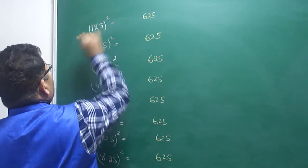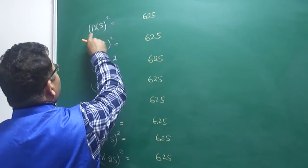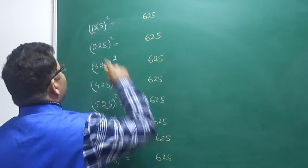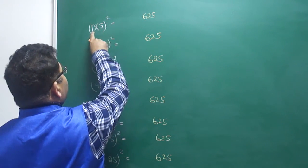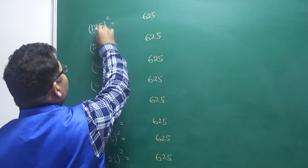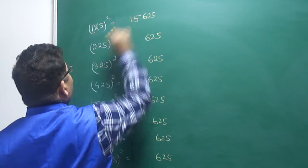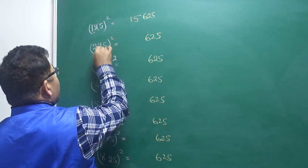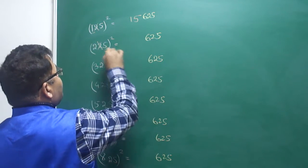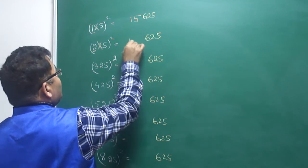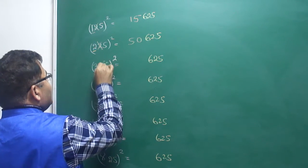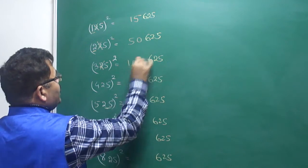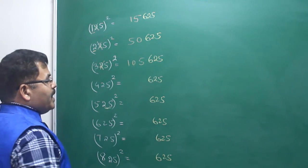Now, once we know the last three digits are 625, what is left? For the remaining digits, the formula is: (leading digits + 10) × leading digits. So for 125, it is 15 × 1 = 15, giving 15625. For 225, it is 25 × 2 = 50, giving 50625. For 325, it is 35 × 3 = 105, giving 105625.